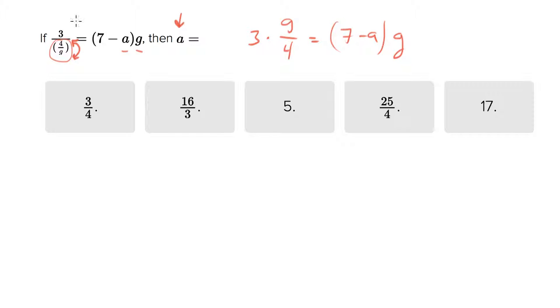And notice this is great, now once you fix that fraction you can see we have a G on both sides so we can cancel those out. So what you end up with is 3 quarters equals 7 minus A.